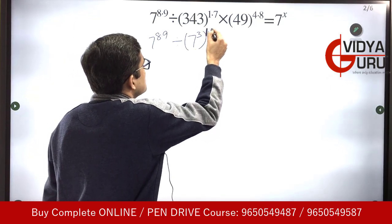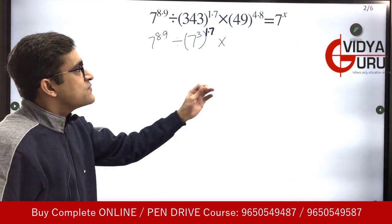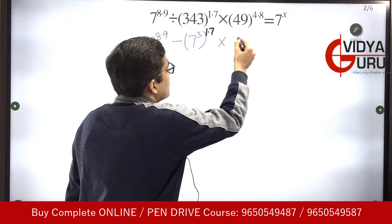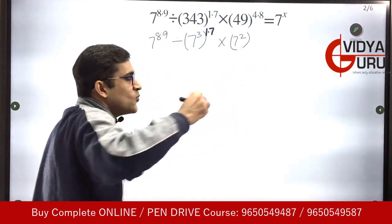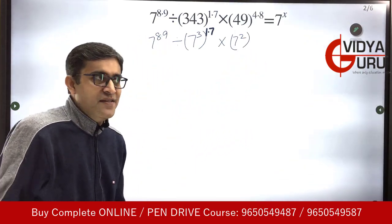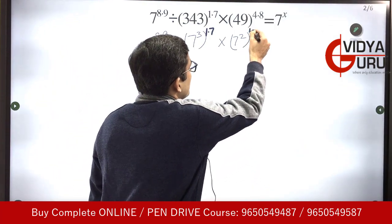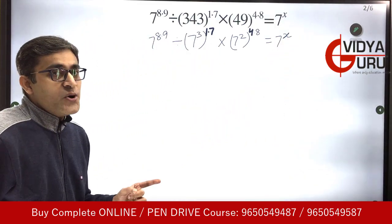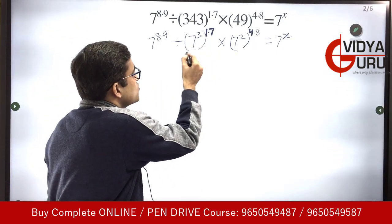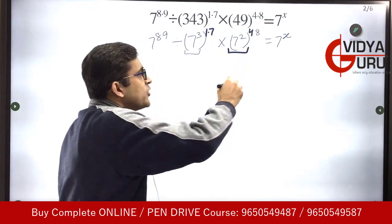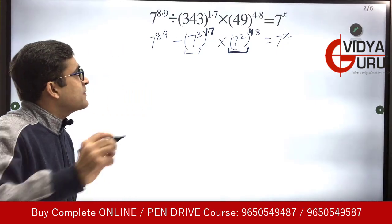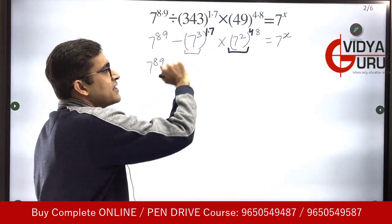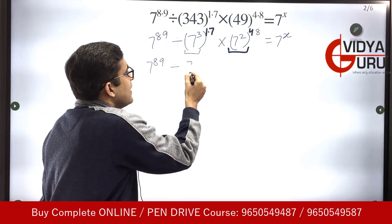The power outside is 1.7. Similarly, students, 49 can be written as 7 square, so I am going to write 49 as 7 square. Now I am converting everything into powers of 7. The power here is 4.8, and this is equal to 7 raised to power x. Now the powers are going to get multiplied. The first term is 7 raised to power 8.9 divided by 7 cube to the power 1.7 — 17 threes are 51 — so the power turns out to be 5.1.